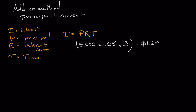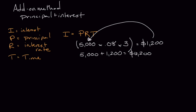Multiplied over the three-year period, we would have total interest of $1,200. To calculate our actual payments — which is why this is called the add-on method — we take the interest and add it onto the principal. So we take $5,000 and add $1,200, giving us $6,200. That's the total amount we would owe over three years. Since there are 36 months in three years, we divide $6,200 by 36.